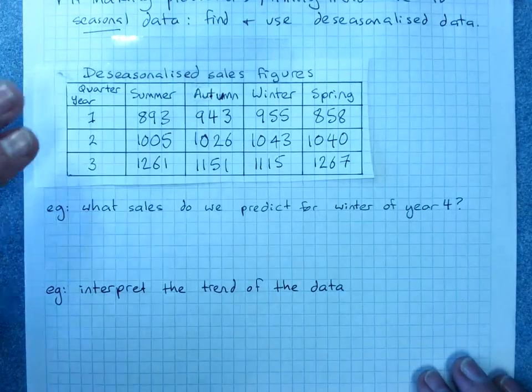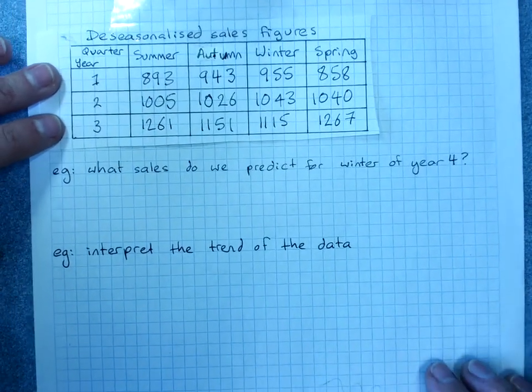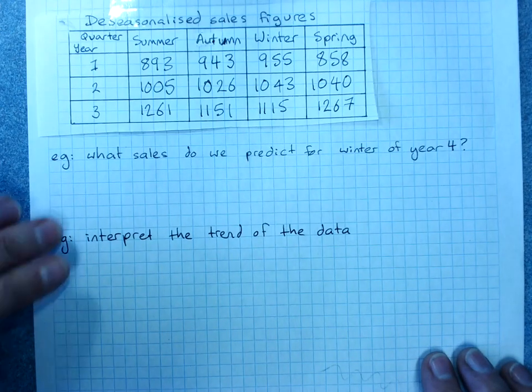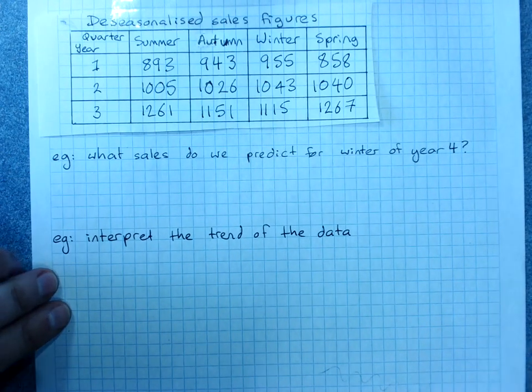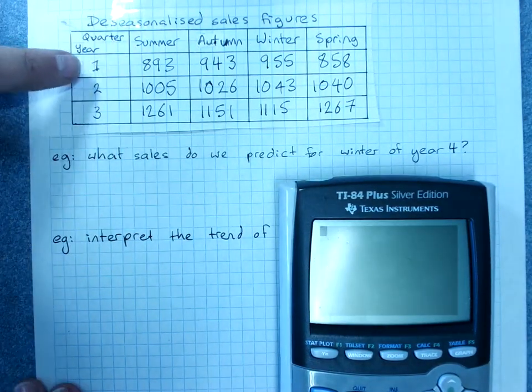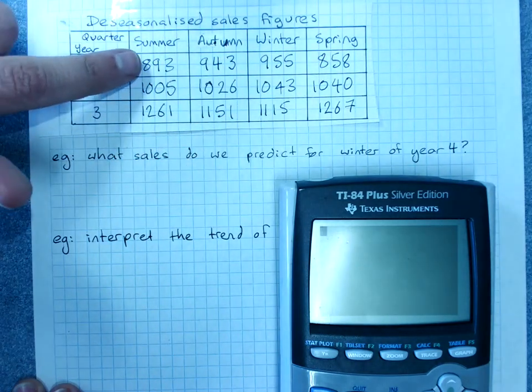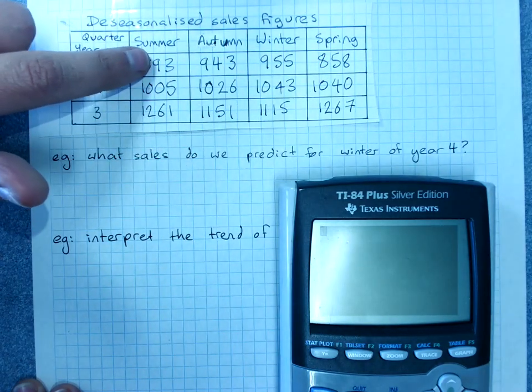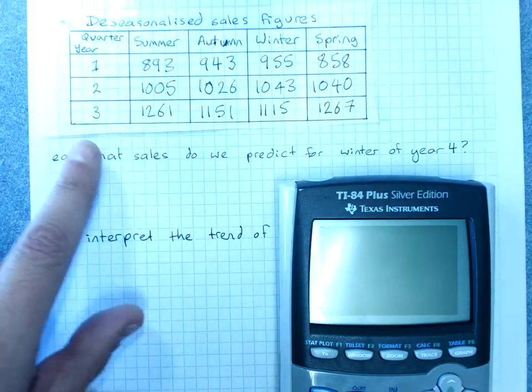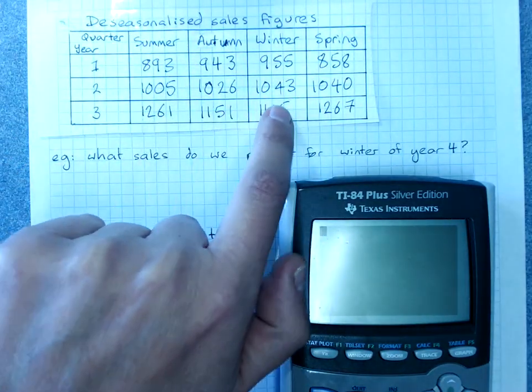So here's the de-seasonalized sale figures that we got. And the types of questions we might get are making predictions or interpreting trends. Now obviously this is year one, but we've got four sets of data so we have to have different quarters. This is quarter 1, 2, 3, 4, 5, 6, 7, 8, 9, 10, 11, 12.